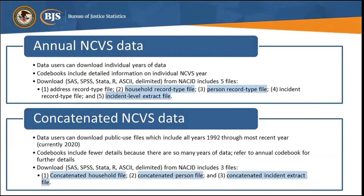We'll discuss more details about the three most important files shortly, but for a quick overview: the address file contains information about the household as reported by the respondent and characteristics of the surrounding area as computed by the U.S. Census Bureau. There are not a lot of variables on this file. The household file contains information about the household, and its primary use is to estimate the number of households in the U.S.